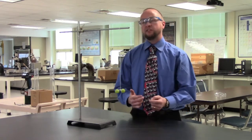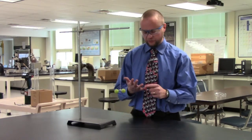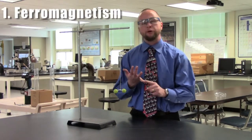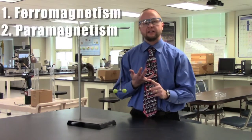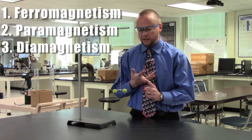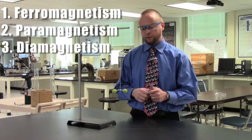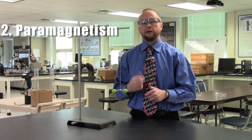So you will learn in this lesson that there are three main categories of magnetism that we're interested in: ferromagnetism, paramagnetism, and diamagnetism. And so these grapes are going to exhibit paramagnetism.